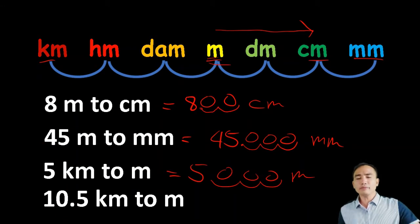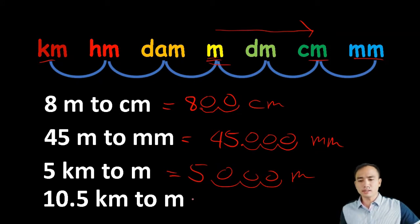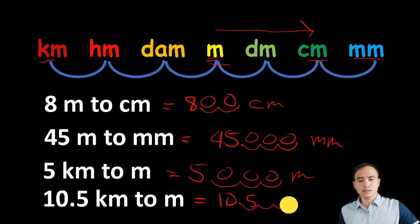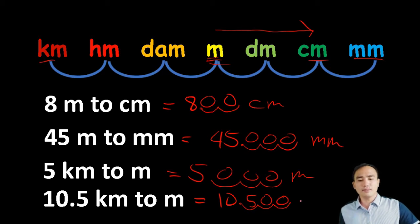Next: 10.5 kilometers to meters. Again, that is three steps away going to meters. Starting with 10.5, we move the decimal point three places to the right and put zeros. The answer is 10,500 meters.